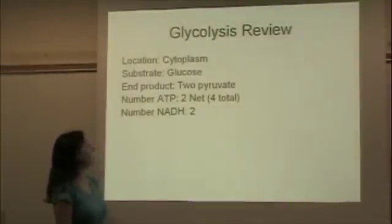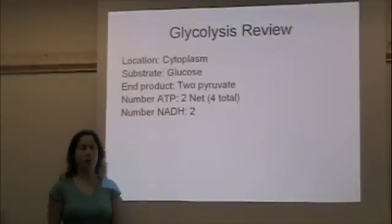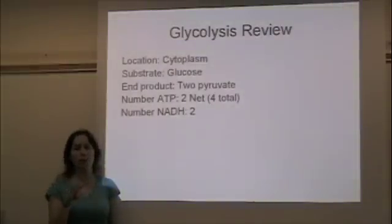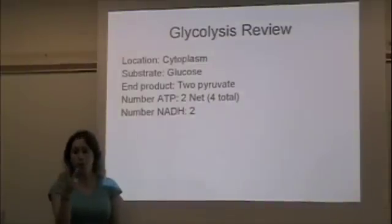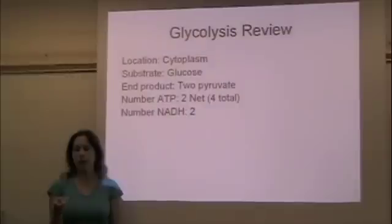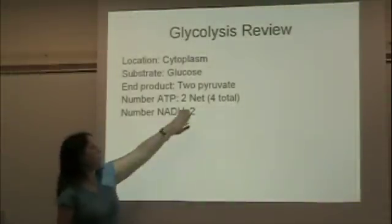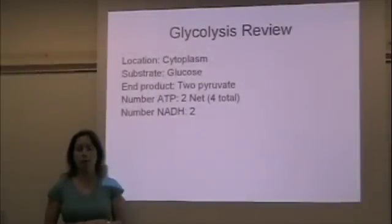In review: glycolysis takes place in the cytoplasm. Our substrate is glucose, a six-carbon molecule, and our end product is two three-carbon pyruvate molecules. We make a total of four ATP, but it's really only a net of two ATP because two of the ATP created in the second part of glycolysis go back and replace the two ATP that initially energized the glucose molecule. So we have two net or two new ATP, which can be used by the cell immediately for energy reactions.